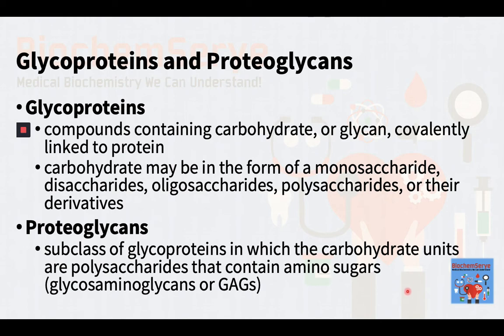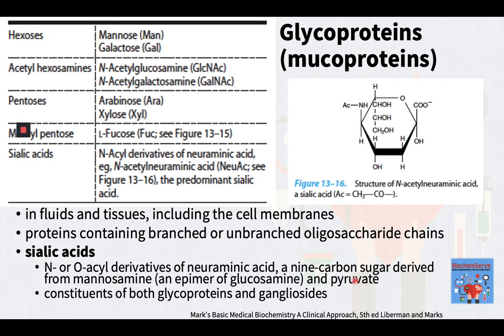Proteoglycans, on the other hand, are a subclass of glycoproteins in which the carbohydrate units are polysaccharides that contain amino sugars, which are termed glycosaminoglycans or GAGs. Glycoproteins, also known as mucoproteins, occur in many different situations in fluids and tissues, including the cell membranes. They are proteins containing branched or unbranched oligosaccharide chains, including sialic acid, as shown in the table. Glycoproteins bind large amounts of water and fill the gaps between the fibrillar components of the ECM in the form of a hydrated gel, inhibiting the spread of pathogens.